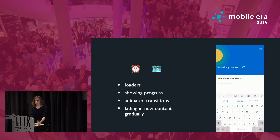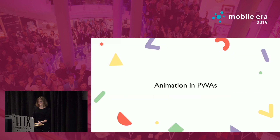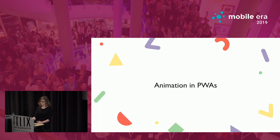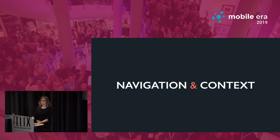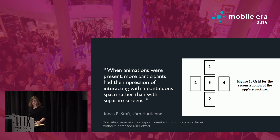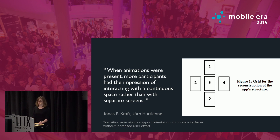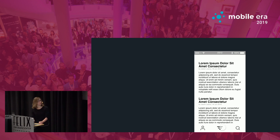That's really good in terms of wait times and orientation. These are really good examples for how animations are done in native applications. But the question is how can we bring some of those animations to progressive web apps? Navigation and the context the user is currently in is really important, because we have a lot of screens and need the user to stay oriented during navigation changes.